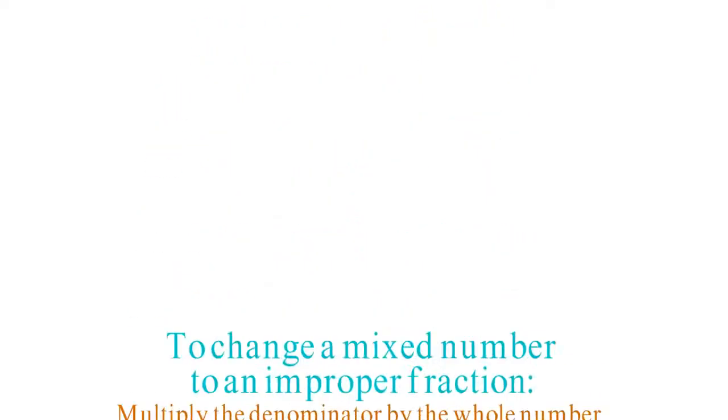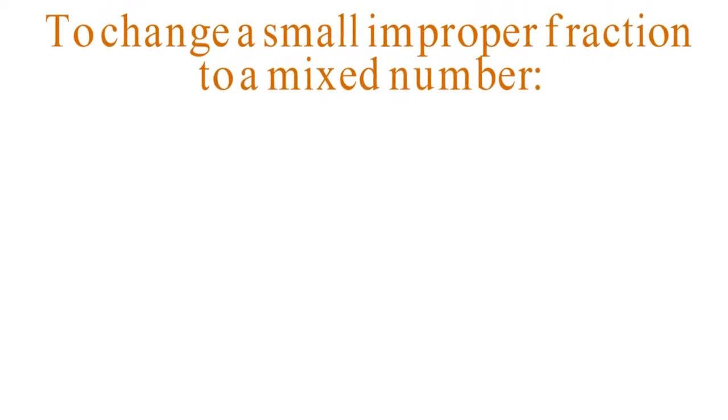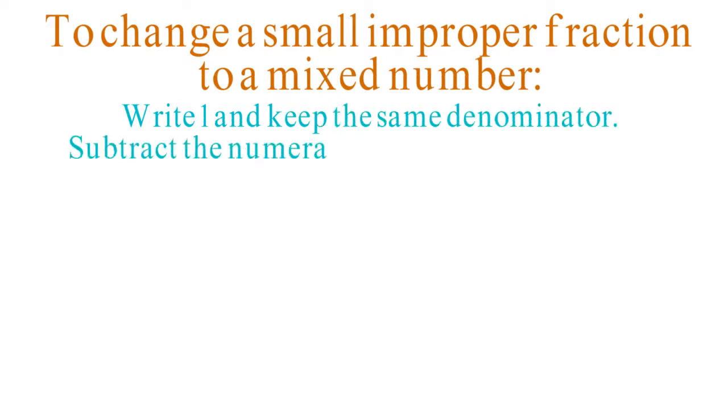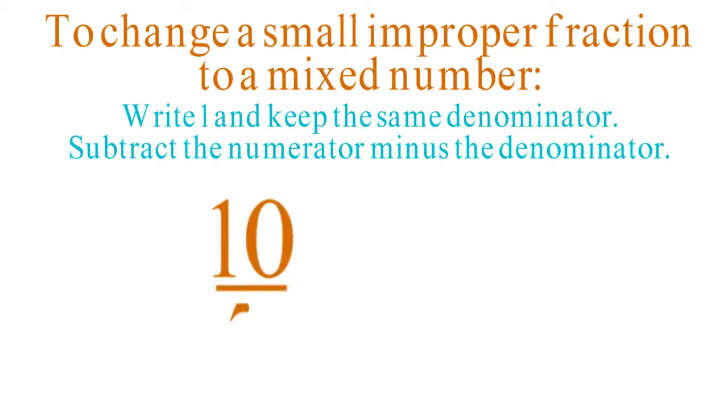As a quick way to change a relatively small improper fraction to a mixed number, write 1 and keep the same denominator, then subtract the numerator minus the denominator to get the numerator of the result. For example, to change 10 sevenths to a mixed number, write 1 and copy the denominator of 7. Then subtract 10 minus 7 equals 3. So the result is 1 and 3 sevenths.